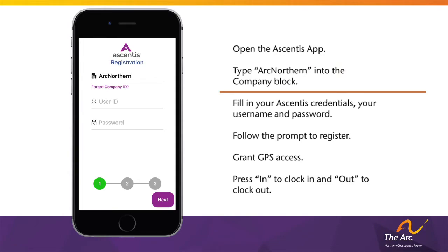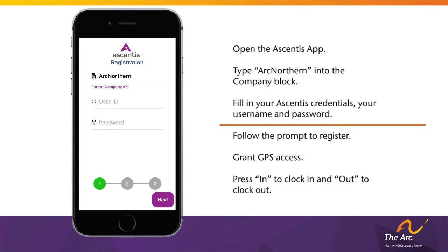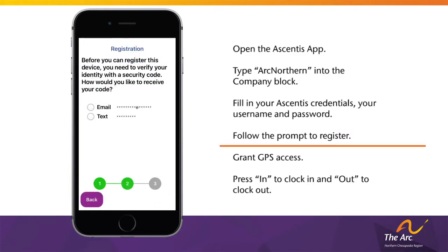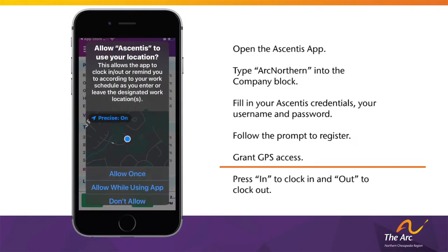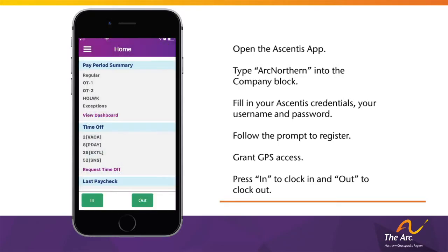Once installed, follow these steps to log in and punch your time: open the Ascentus app on your phone and type ARCNORTHERN into the company block. Fill in your Ascentus credentials — your username and password. If needed, contact the Human Resources team for help. When first using the app, follow the prompt to receive a security code for authentication and enter the code to continue. When prompted for GPS access, click to always allow GPS access, as timekeeping GPS information is required by the Arc Northern region. Once logged in, there is a button labeled In to clock you in and a button labeled Out to clock you out.